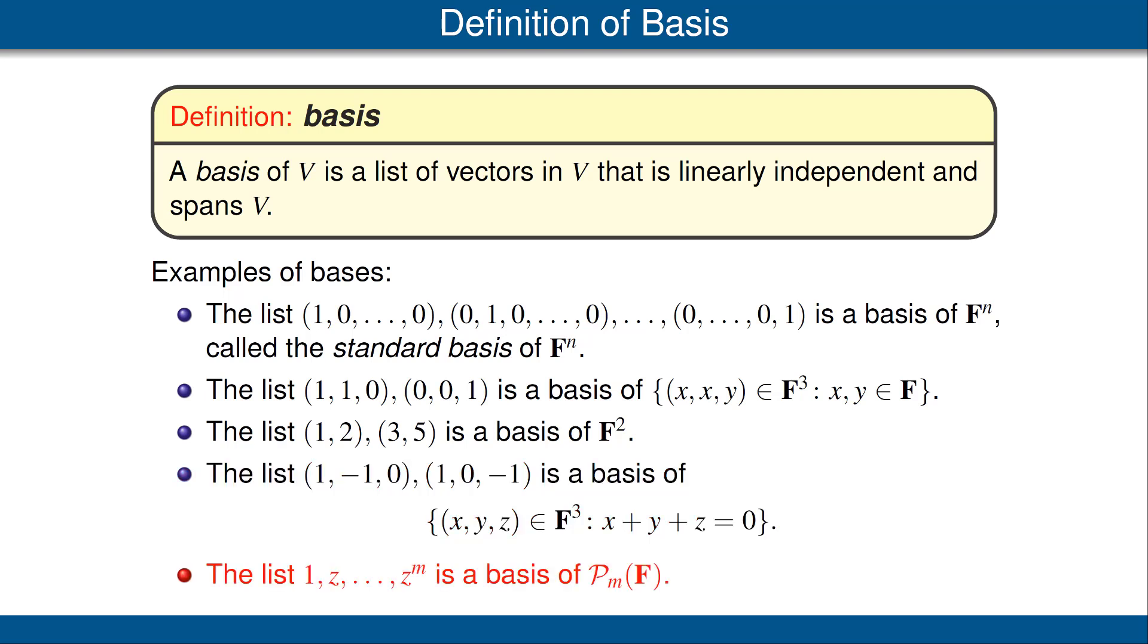Our final example is in P_m(F). So here m is a non-negative integer, and we look at the polynomials 1, z, up to z^m. They obviously are a basis of P_m because, first, they're linearly independent and, second, their span is equal to P_m. In fact, the definition of P_m(F) is the span of those vectors. Notice that in this case, each of our vectors is actually a function, not a list of n numbers.